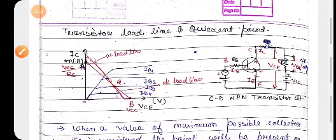Good afternoon, dear students. Today's topic is transistor load line, quiescent point, and transistor biasing. So let's start.